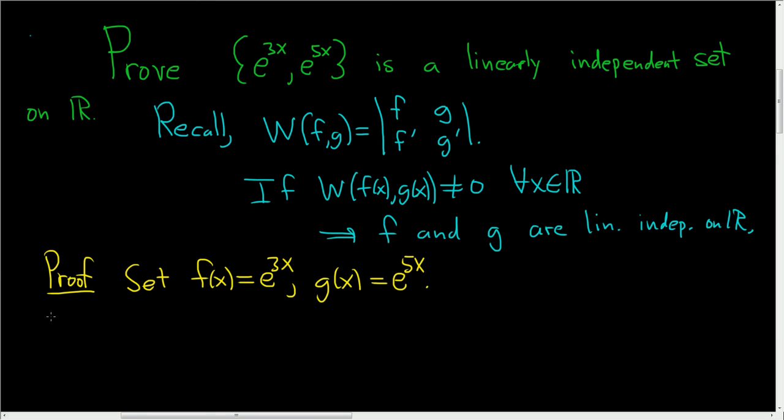Then we'll just take the derivatives. So then f prime of x, well, the derivative of e to the x is e to the x, so this is e to the 3x times the derivative of the inside. So the inside function is this one, and the derivative of 3x is simply 3. So f prime of x is equal to 3 e to the 3x. Likewise, g prime of x is equal to 5 e to the 5x.